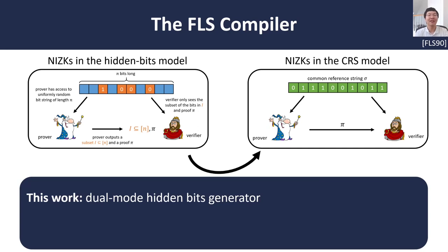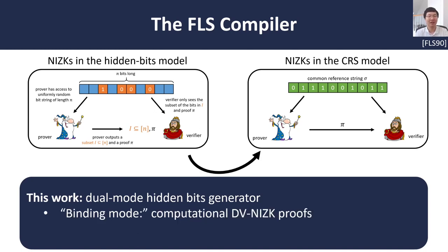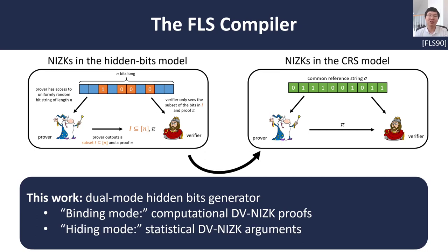In fact, we show a way to realize this compiler in a dual-mode fashion. In particular, there are two ways that we can sample this common reference string. In one mode, called the binding mode, the common reference string will induce a hidden bits model where we achieve computational zero knowledge and statistical soundness. Alternatively, if we switch to a different mode — a different way of sampling the common reference string — we get what's called the hiding mode, where the resulting construction actually provides statistical zero knowledge and computational soundness.